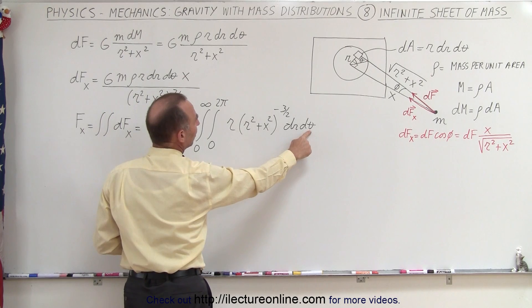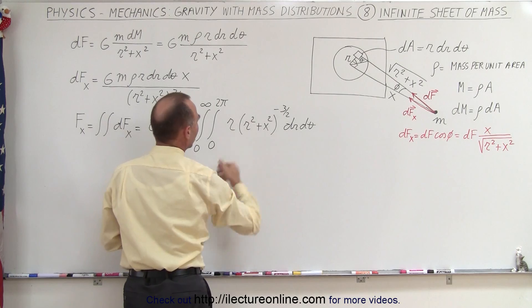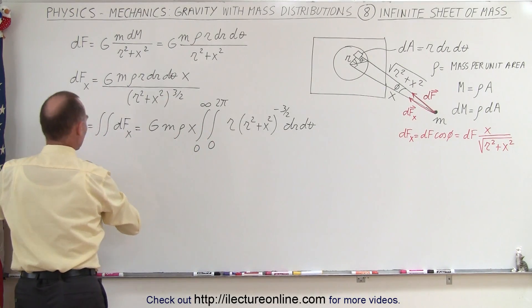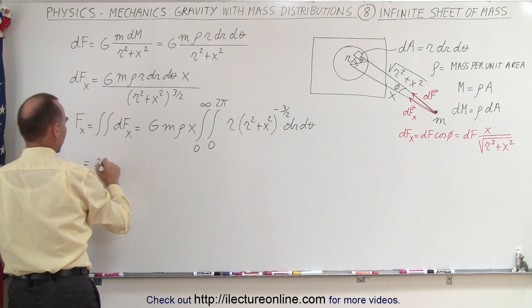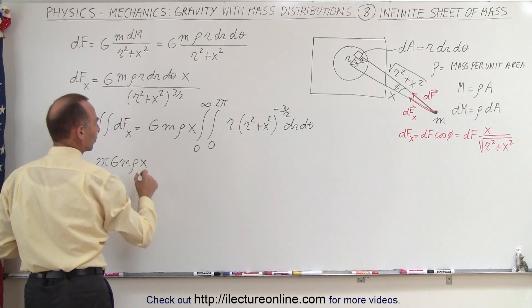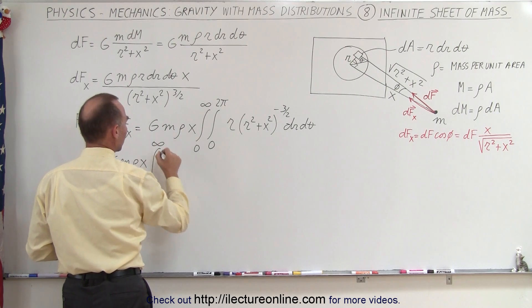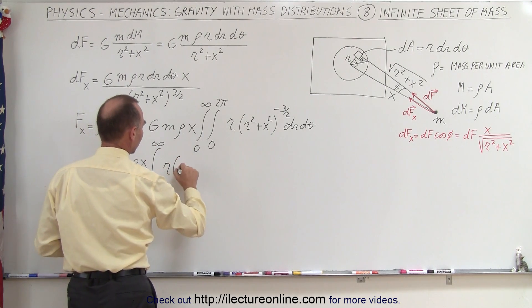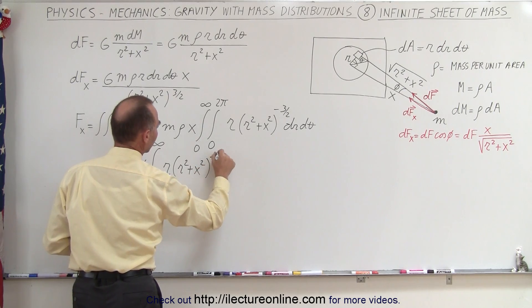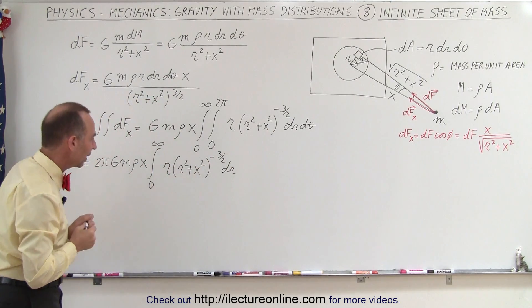Integrating over theta is easy. We integrate over theta, we get theta going from 0 to 2 pi, so we end up at a 2 pi. So this is equal to 2 pi times g m density x. And now we still have our single integral from 0 to infinity of r times r squared plus x squared to the minus 3 halves power times dr. So d theta was easy to integrate.